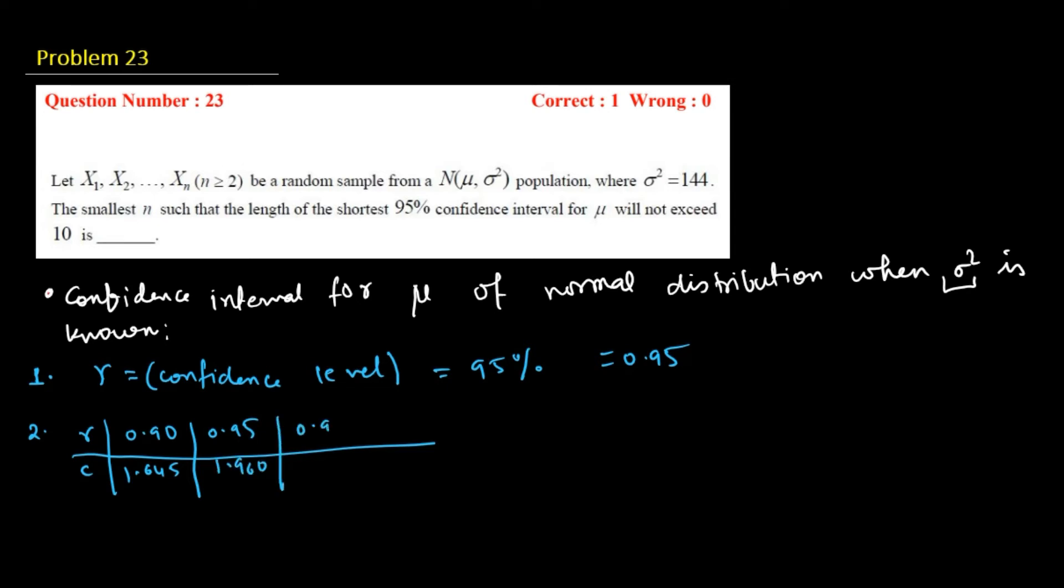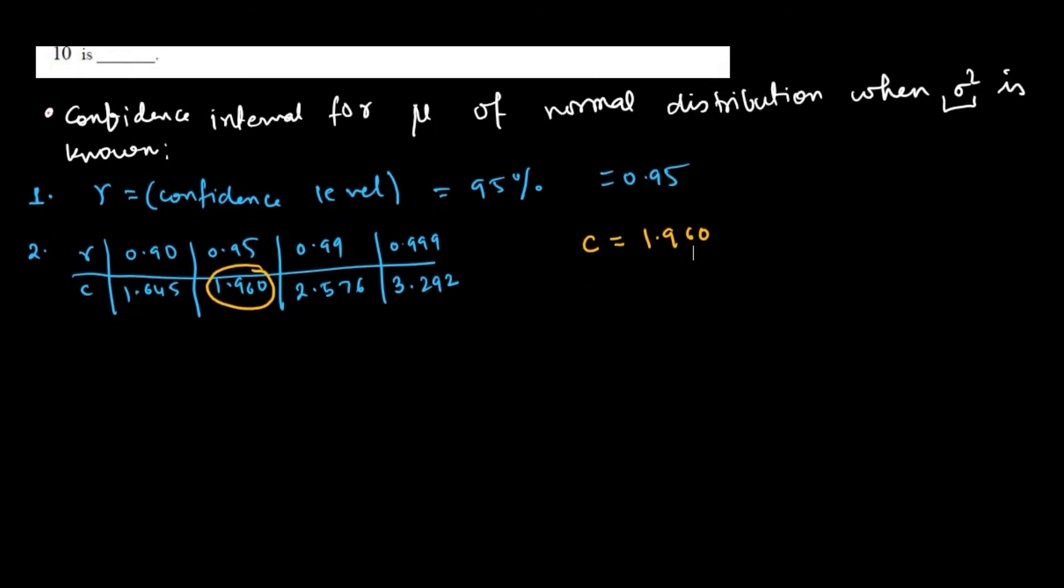For 99%, it is 2.576, and for 99.9%, it is 3.291. So your c value is 1.960. Step 3, sample mean.